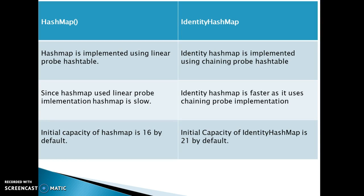The initial capacity of HashMap is 16 by default, and the initial capacity of IdentityHashMap is 21 by default. These are the differences between HashMap and IdentityHashMap. Thanks for watching — if you like my videos, don't forget to subscribe.